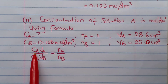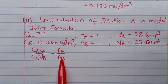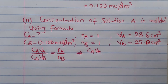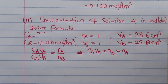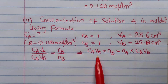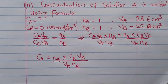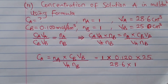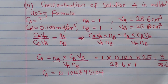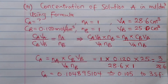Making CA the subject formula by cross multiplication, and dividing through by VA and VB, CA stands alone. Inserting the values and leaving the answer to 3 significant figures, we get our answer for CA.